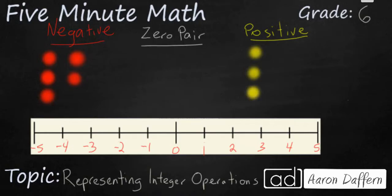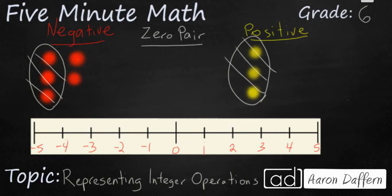We can do so by using the principle of a zero pair. A zero pair simply means one negative and one positive cancel each other out and they make zero. So let's pair these up. I've got 3 negatives over here and 3 positives over here. So those are going to cancel each other out. And you see all that I have left are 2 negatives. So my answer is going to be negative 2.